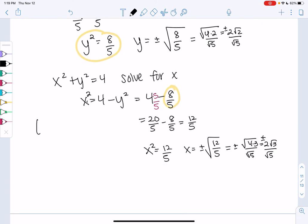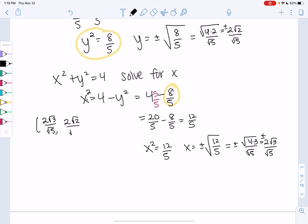So both positive. 2 root 3 over root 5. And then 2 root 2 over root 5. And then we'll just mix and match all those negatives. So positive x, negative y, negative x, positive y, and then both negative. And those are our four solutions.